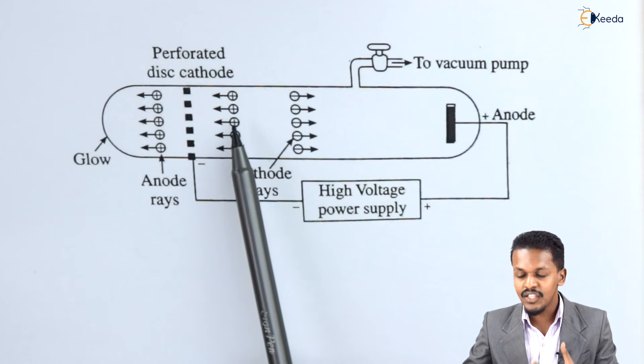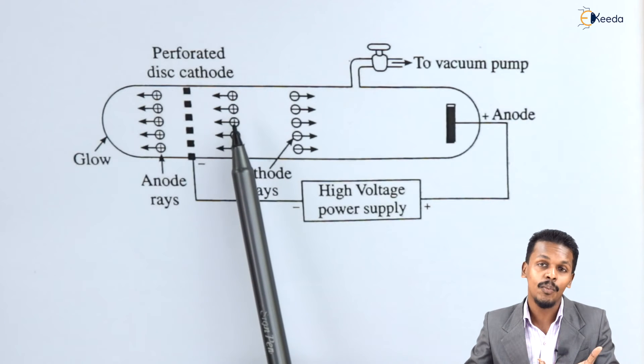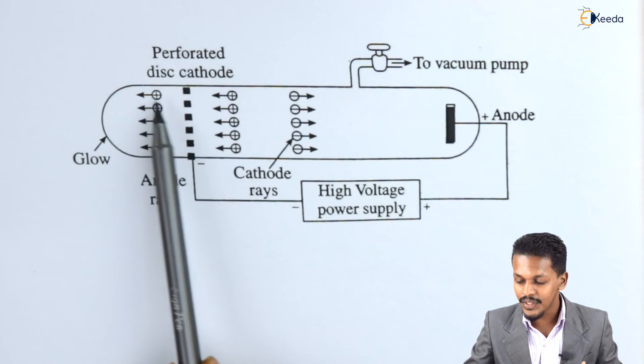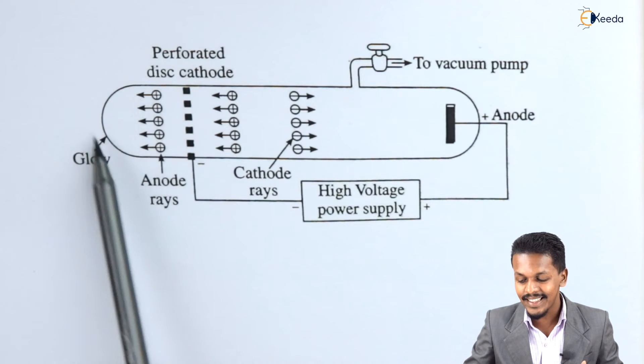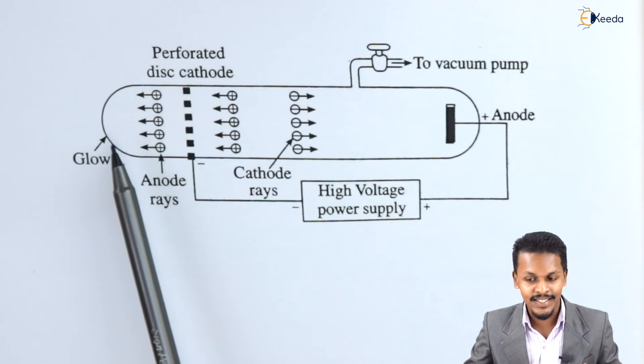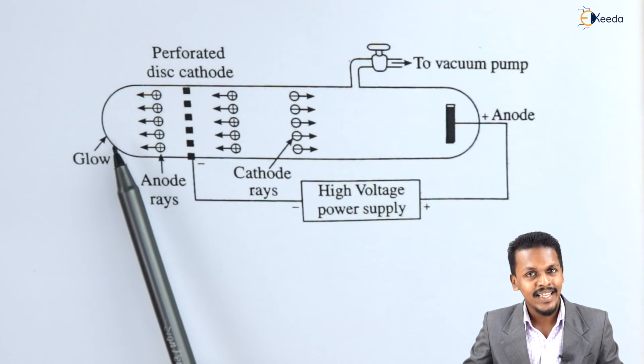While the positively charged particles, now they are in the form of rays, so therefore they will enter through this pore and they will hit this part of the glass and this part will glow.